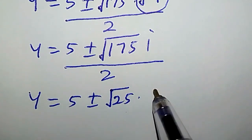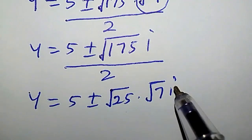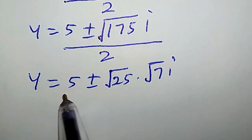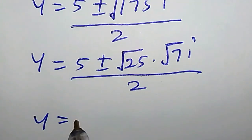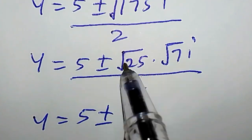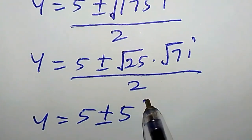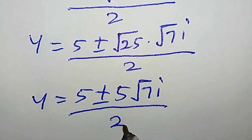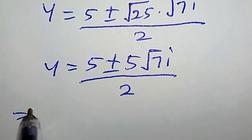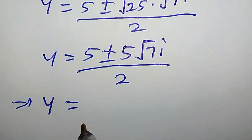Proceeding further, y equals 5 plus or minus square root of 175. Now 175 can be written as 25 times 7, so square root of 175 equals square root of 25 times square root of 7, which is 5 root 7. So we have y equal to 5 plus or minus 5 root 7 times i, all divided by 2.